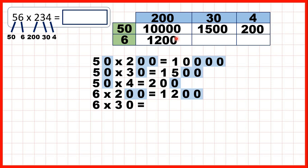Here we have 6 times 30, so that's 180 because 6 times 3 is 18, and then we need one end zero. And finally we have 6 times 4, which is 24.